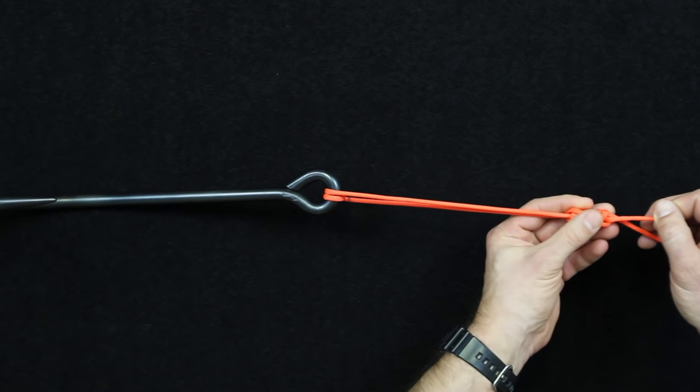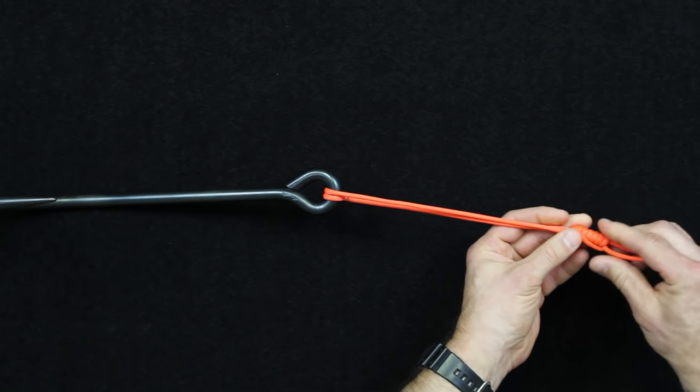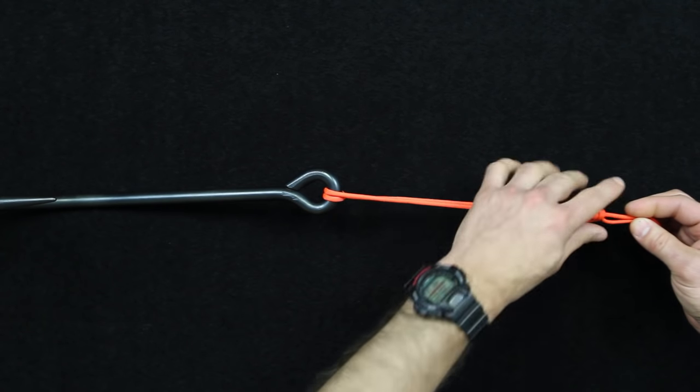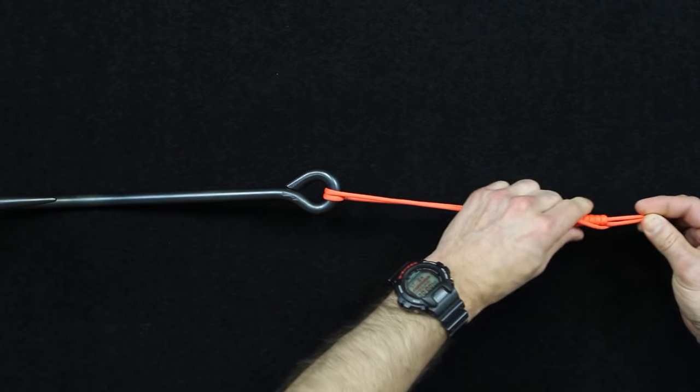Paracord doesn't want to move as easily as monofilament, but if you are using monofilament at this step, you can also wet the monofilament. It'll help it slide on the line itself.